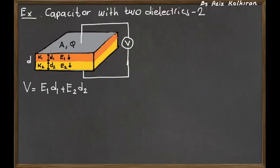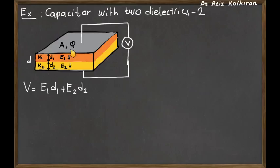The next step is to find the total potential difference between the plates in terms of the electric fields and their thicknesses. Since the potential is just a line integral between any two points, the total potential difference will be E1 times d1 plus E2 times d2. If you go from a point on the upper plate to a point on the lower plate, you cross the first dielectric of thickness d1 — multiplying E1 by d1 gives the potential drop inside the first dielectric — and E2 times d2 gives the potential drop inside the second dielectric.